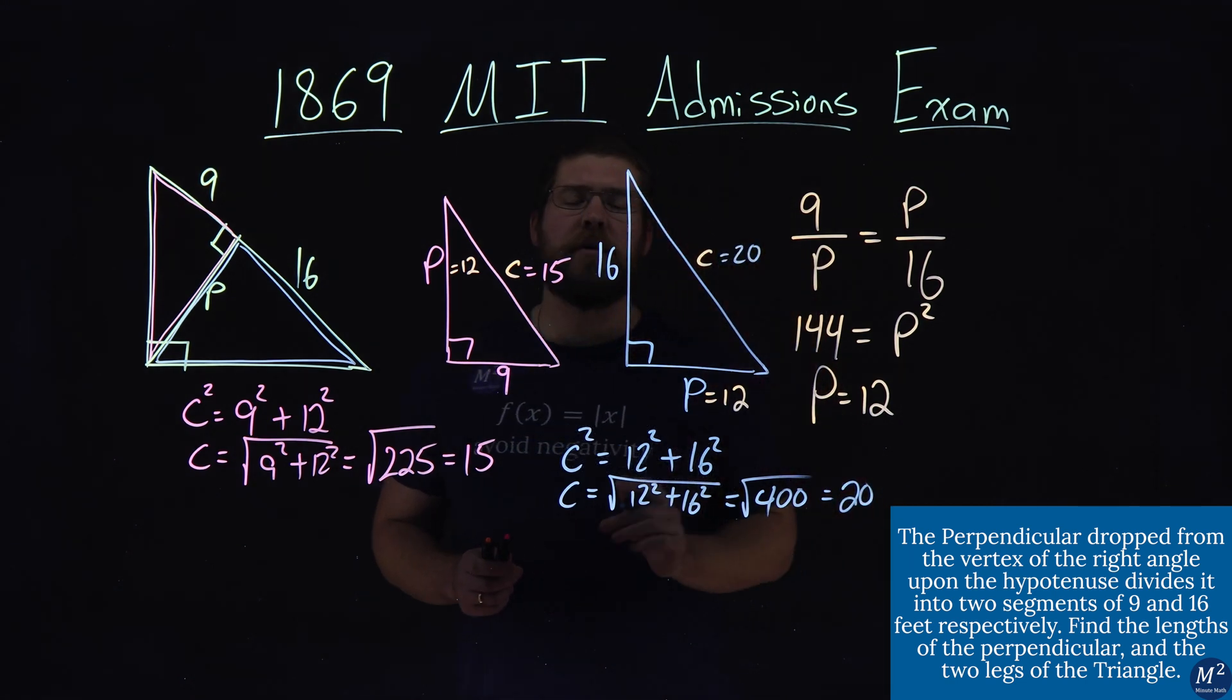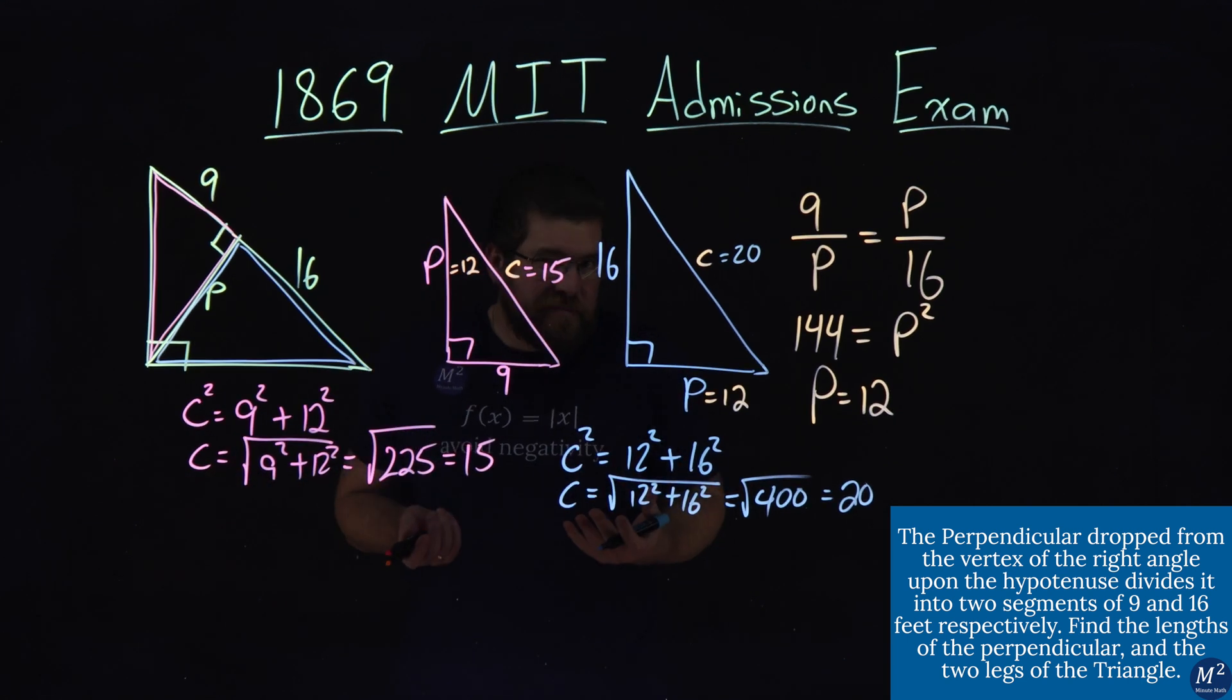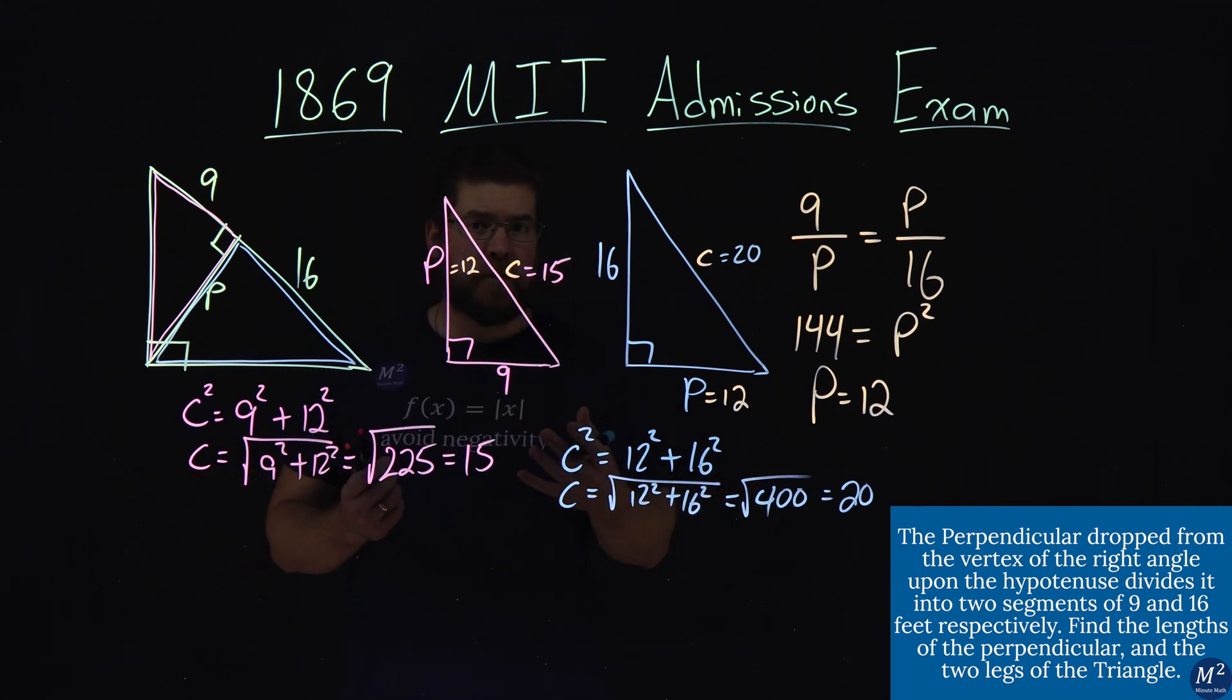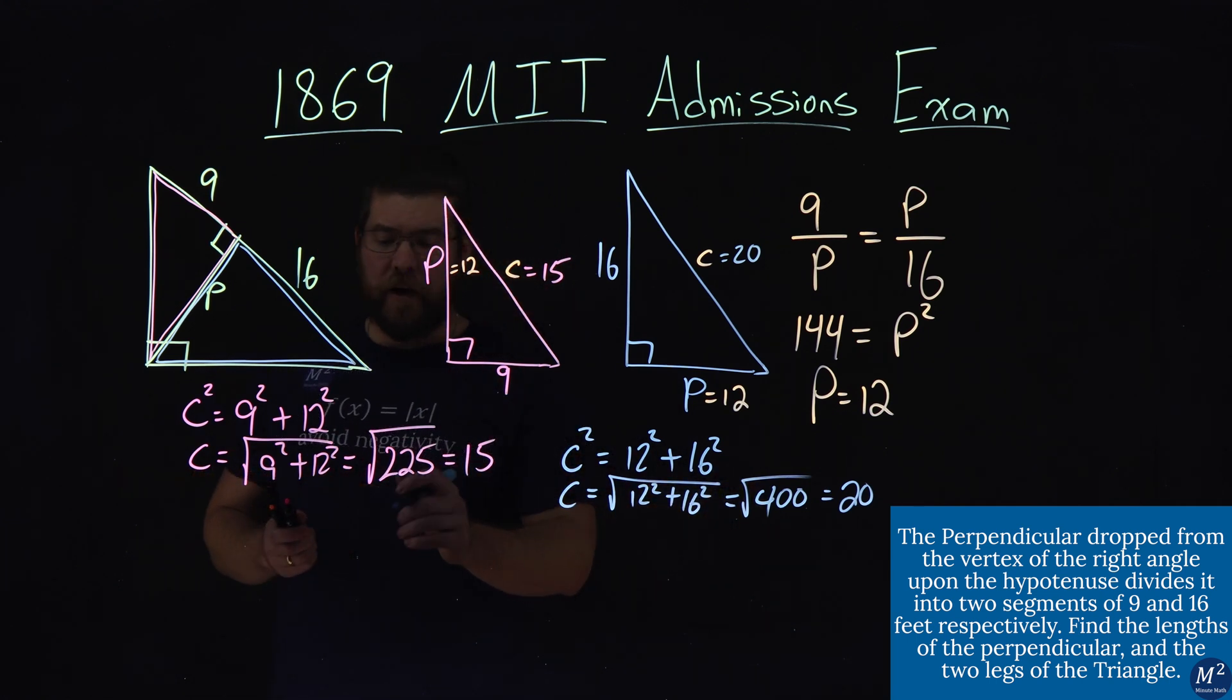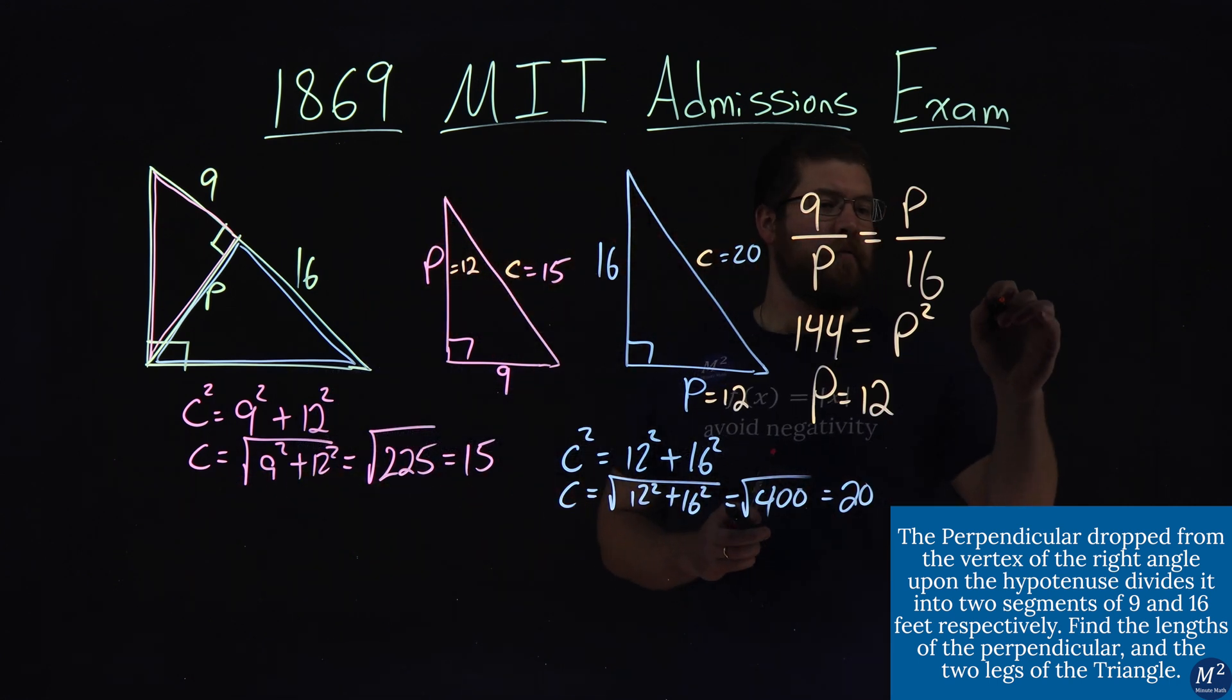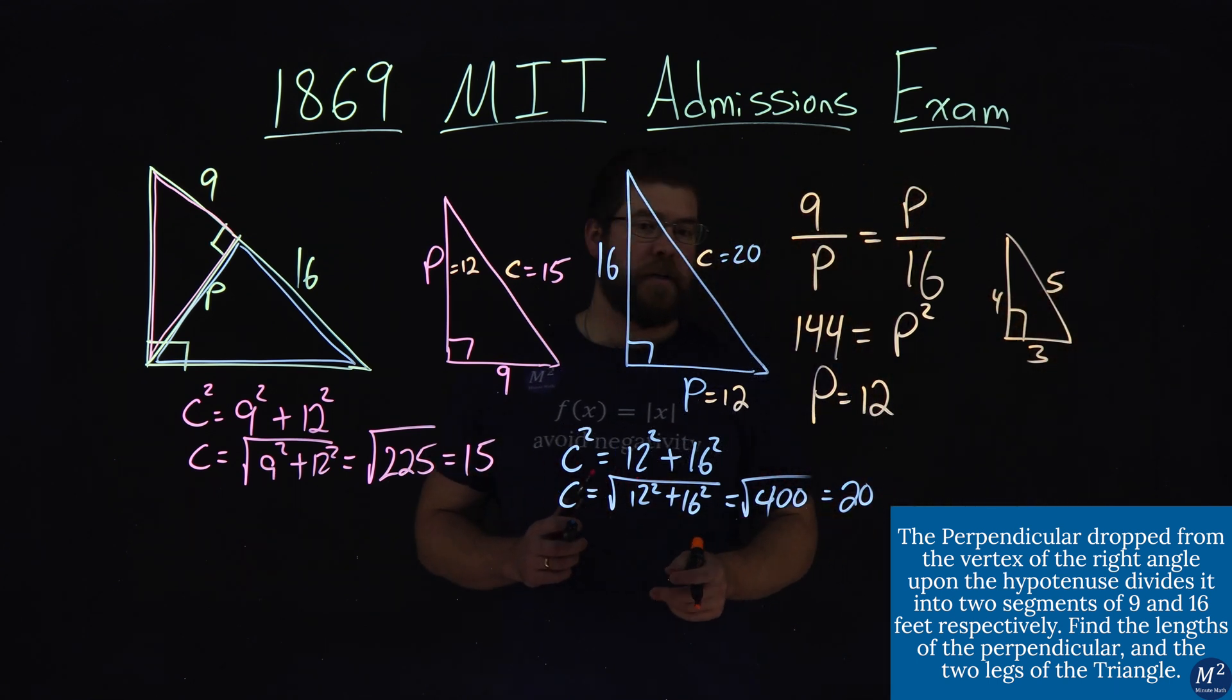Now we could have found these values, the last values we're supposed to find here, by understanding what we know about these right triangles here. All these right triangles are a deviation of the 3, 4, 5 triangle. So we have the 3, 4, 5, and we multiply each one by a factor here.